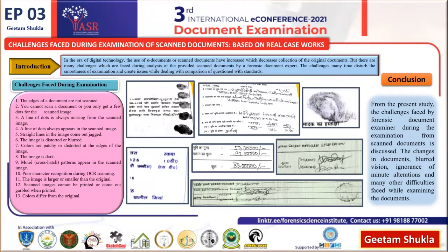Now in the fourth picture, this image is distorted and blurred, so the examiner cannot observe the particular details. You can also see that the incomplete ink deposition and the execution of the numerals are not much visible due to the scanned document.